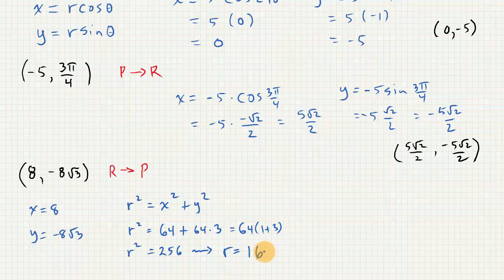The standard representation is to have a positive r value and a theta value that's between 0 and 2 pi. Now, to get the theta value, tangent of theta is y divided by x. So tangent of theta is going to be equal to, we look over here, y divided by x. The 8s will cancel, and we'll have negative root 3.